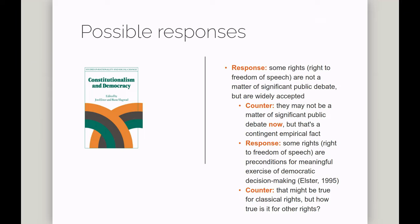That second response seems much more promising, but it doesn't seem to work for all rights. It works very clearly for rights to freedom of speech and freedom of assembly — what we might call classical rights. But it seems to work less well for other rights commonly found in more modern constitutions. For example, some constitutions include a right to housing. You might argue that people can only meaningfully exercise democratic choice if they have stable accommodation, but that argument is slightly more controversial.